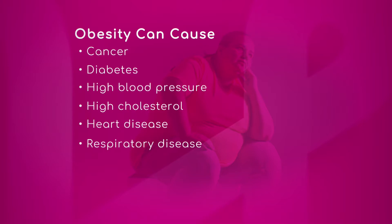For example, cancer. Two out of the three most prevalent cancers in the United States are mostly in women — breast cancer in postmenopausal women is higher in obese women, and endometrial cancer, which is the cancer of the uterus, is also higher in women who are obese.